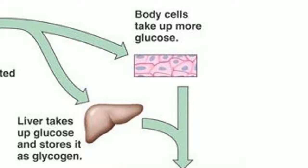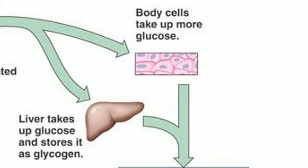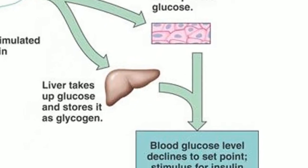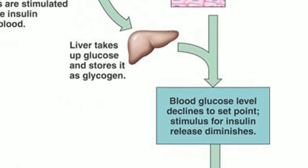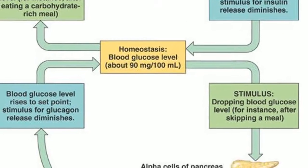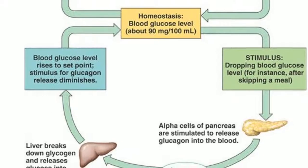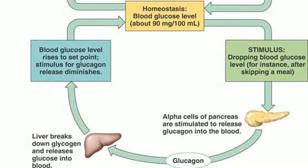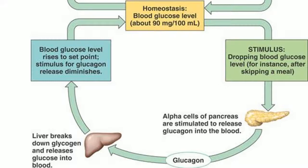As glucose is absorbed by the absorptive cells, the blood glucose level increases, and the liver takes up this extra glucose and stores it in the form of glycogen. As the liver keeps storing glucose and removing it from the bloodstream, the glucose level in the bloodstream drops, and once it drops sufficiently the liver releases glucose back into the bloodstream.